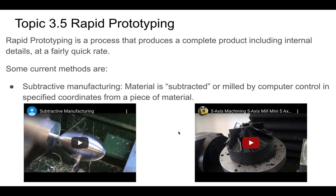Here are a couple of examples of subtractive manufacturing. Again, we're milling. Here's that same definition - so this is just a few different techniques. And then this is a five-axis milling machine. This is the kind of stuff they have at the core labs where if a scientist needs a part for their experiment made out of aluminum, they will be able to mill that. Milling is when you subtract material from something - so it's a five-axis CNC router.